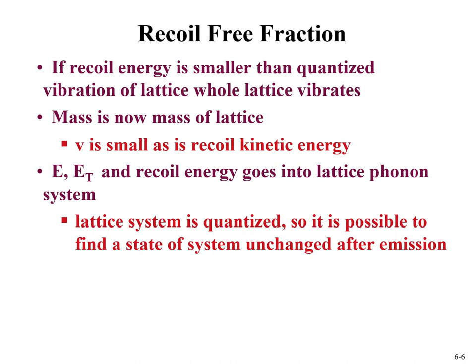Fundamentally, if you use a sample at an energy above 150 keV, nearly all events vibrate the lattice and give rise to Mössbauer spectra. There's a large recoil-free fraction — the fraction that vibrates the entire lattice rather than the individual atom. Experimental methods include using reduced temperature, which reduces lattice vibration and increases the recoil-free fraction. If the gamma-level half-lives are greater than 10⁻¹¹ seconds, the width is around 10⁻⁵ eV, which can be achieved by a Doppler shift at around 3 centimeters per second.